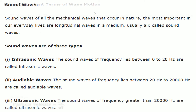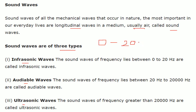Sound waves are among the mechanical waves that occur in nature — specifically, they are longitudinal waves in a medium, usually air. There are three types based on frequency range: infrasonic (0 to 20 Hz), audible (20 Hz to 20,000 Hz), and ultrasonic (20,000 Hz and above).